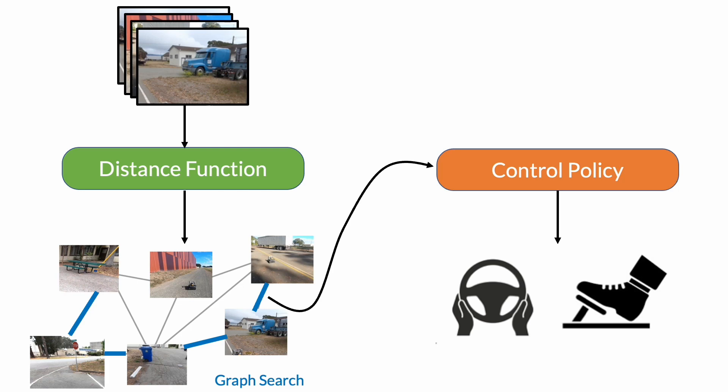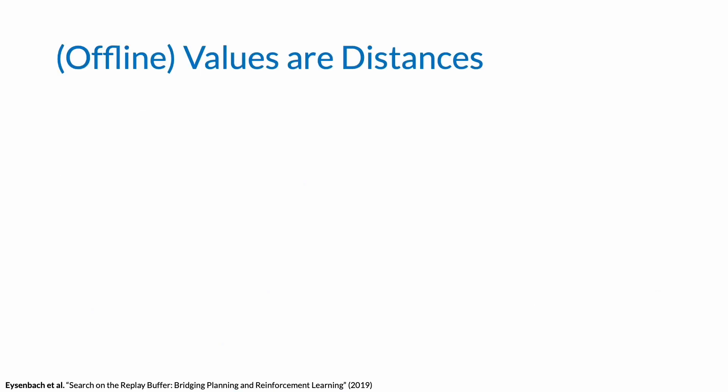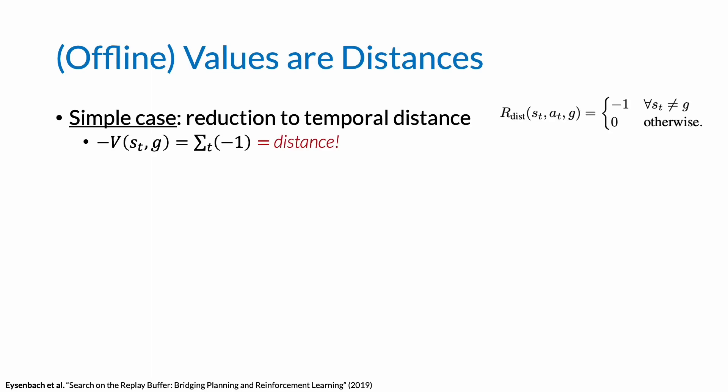It is easy to see that the control policy can be learned with RL, but what about the distance function? To combine offline reinforcement learning with topological graphs, we use an important observation that Q-Learning gives us both these models. Importantly, the learned value function with reinforcement learning can be interpreted as a distance metric. For the simplest case of a negative one survival penalty and no discounting, this is easy to see. The optimal value function for this reward directly corresponds to the negative temporal distance function itself.